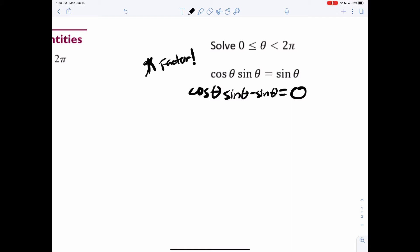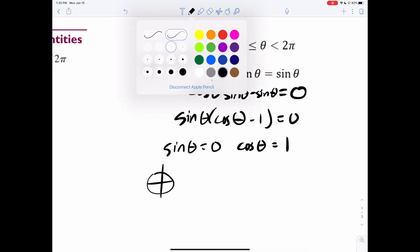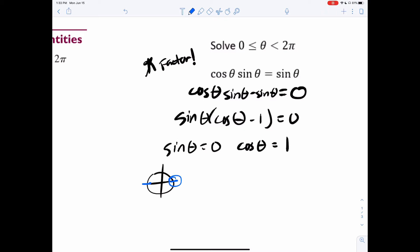Okay, so factor. So let's take out the sine theta. That's cosine theta minus one equals zero. And now we have our answers. Sine theta must be zero or cosine theta must be one. This one's interesting because sine theta is zero here and here and cosine theta is one at that location. So the answers overlap a little bit. So the answers are zero and pi.